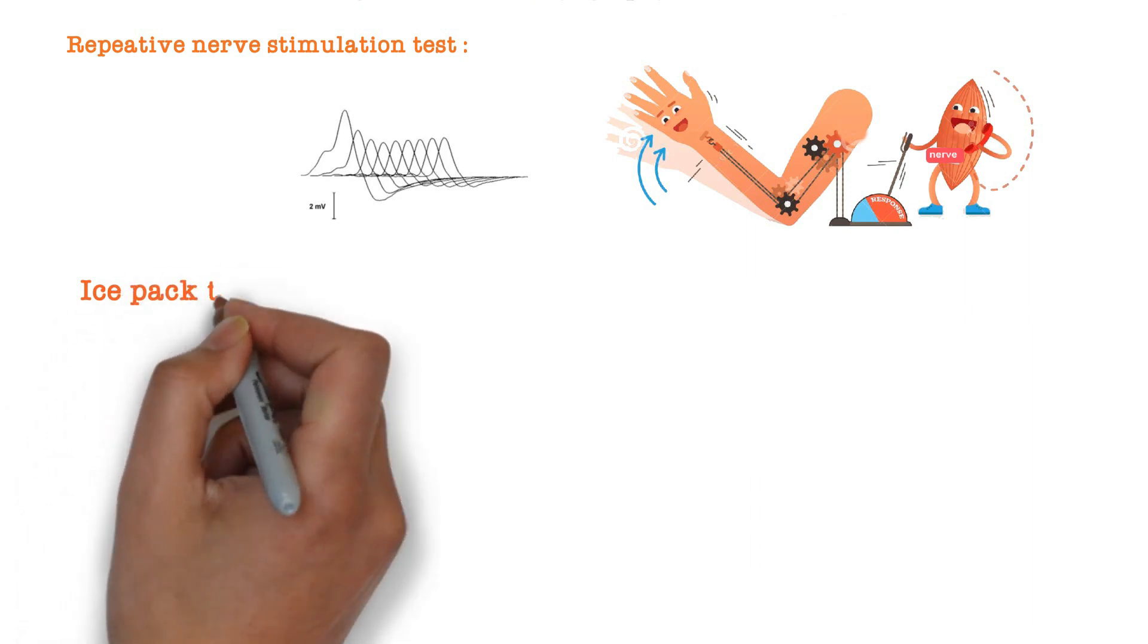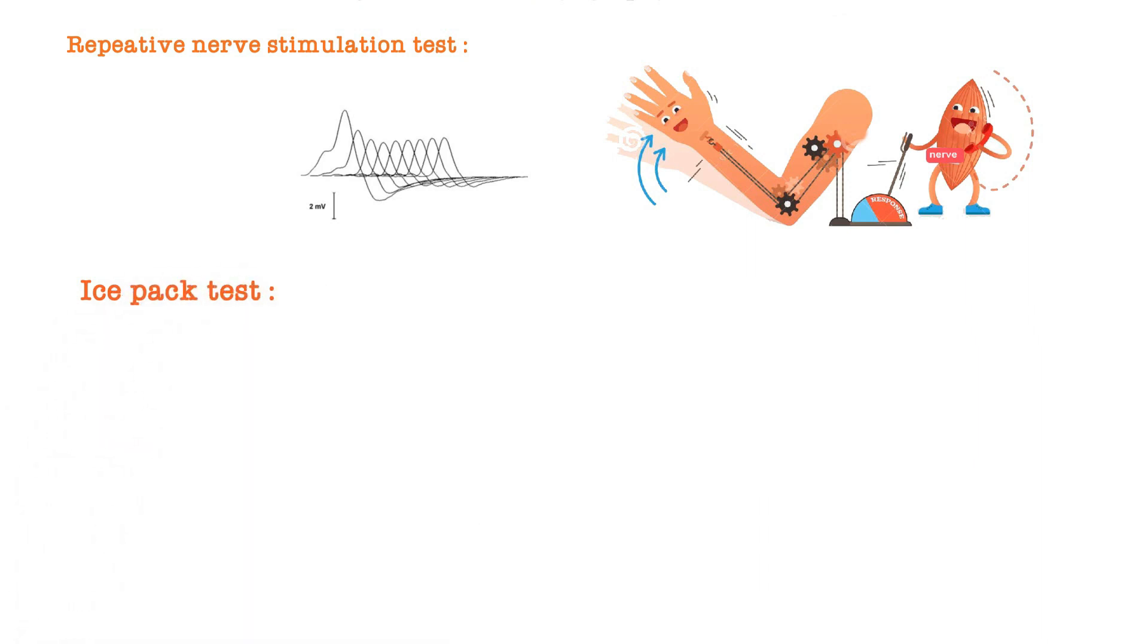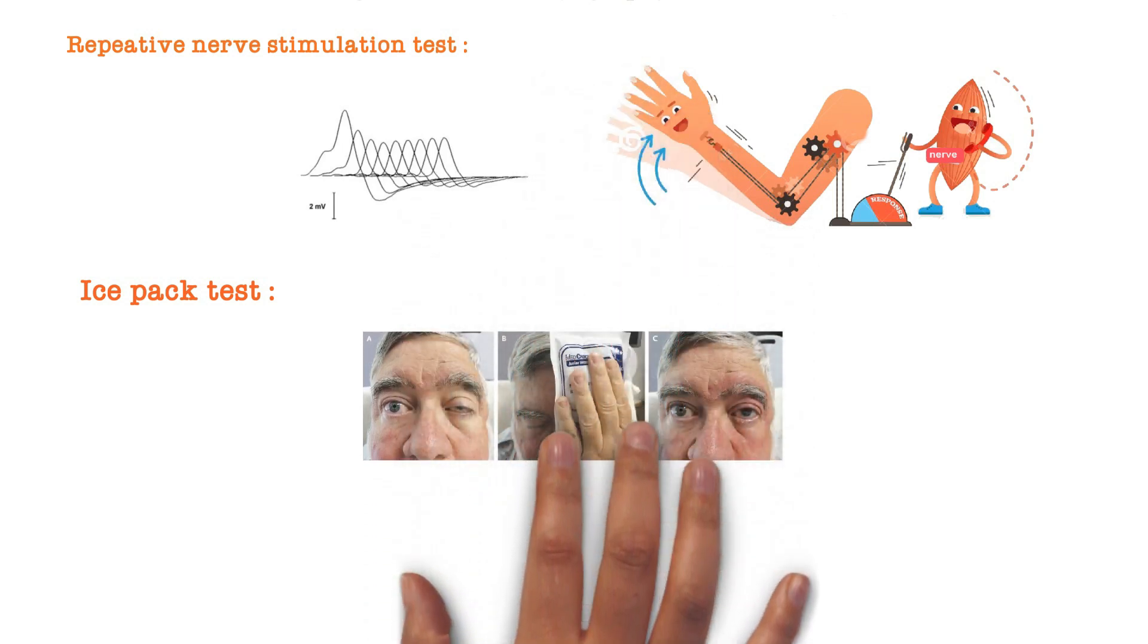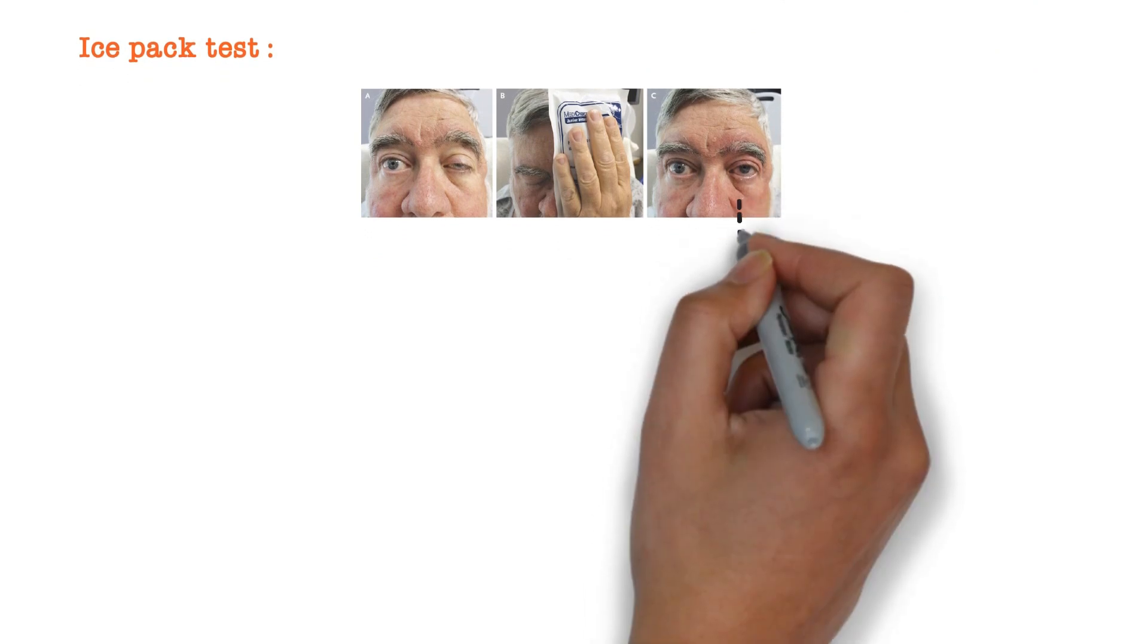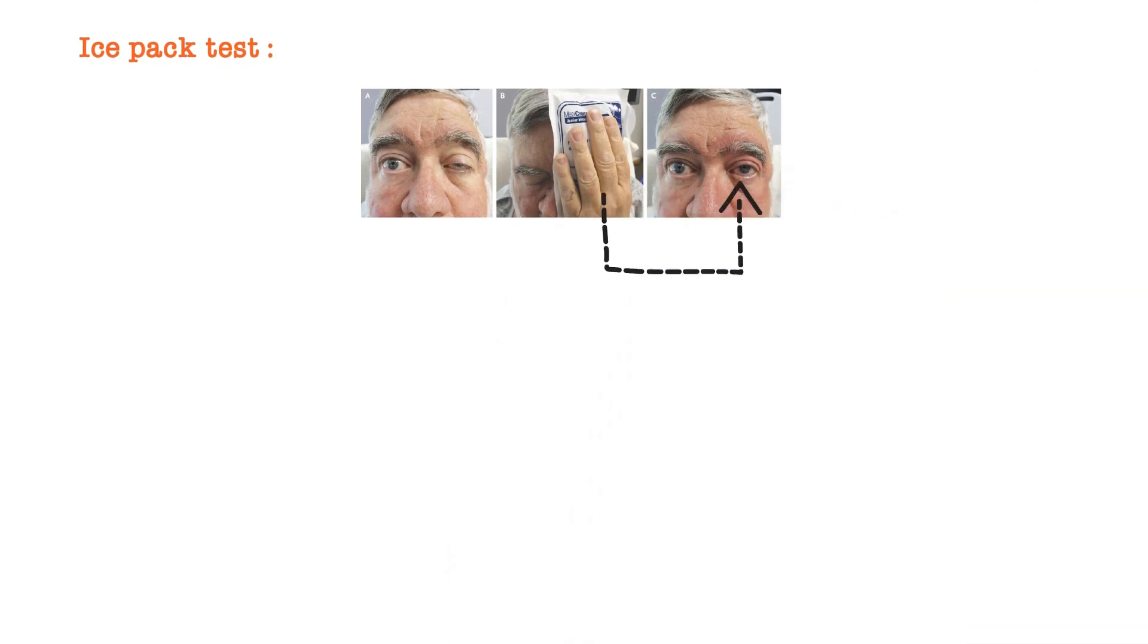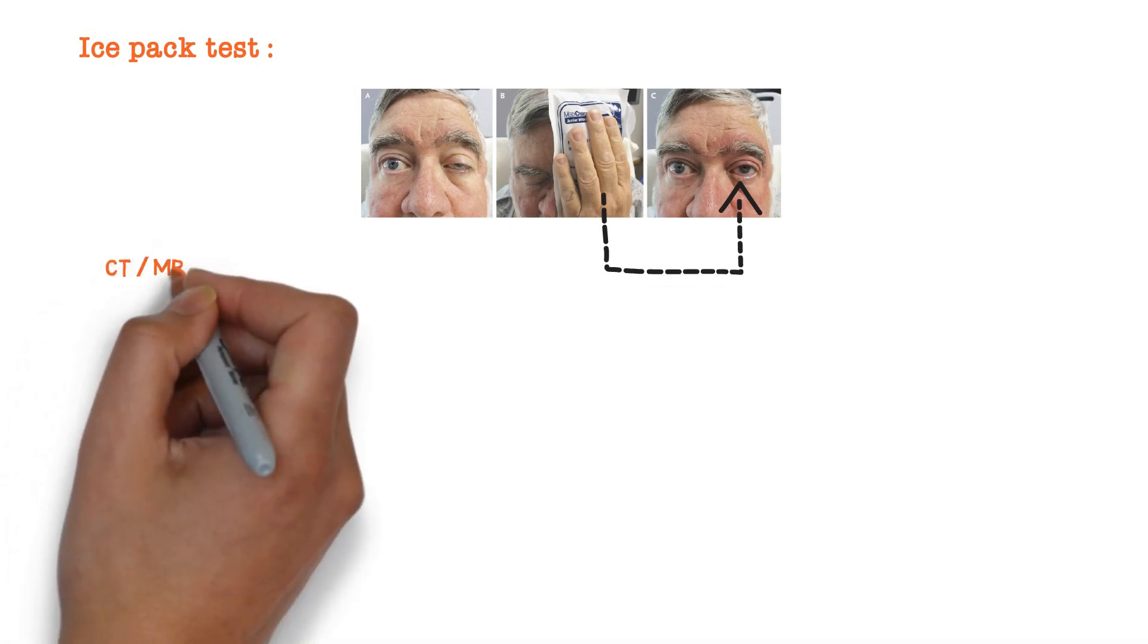There is also the ice pack test. I told you when we ask patient for upward gaze, there is trigger of ptosis. Then ask patient to apply the ice bag. After 3 to 5 minutes application of ice bag, ptosis is substantially reduced. This is the ice pack test which decreases the activation of acetylcholinesterase, which is sensitive to temperature.